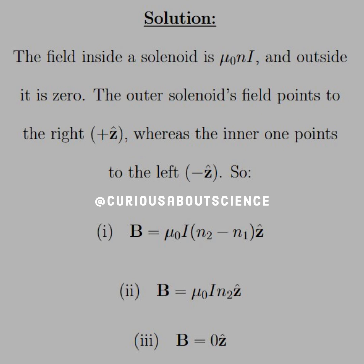In between, the inner solenoid's field is zero outside it, but the outer solenoid's field is still present inside, so we just have B = μIN2 in the positive Z-hat direction. And if we're outside both solenoids, we don't need to consider either field, because they're both zero.